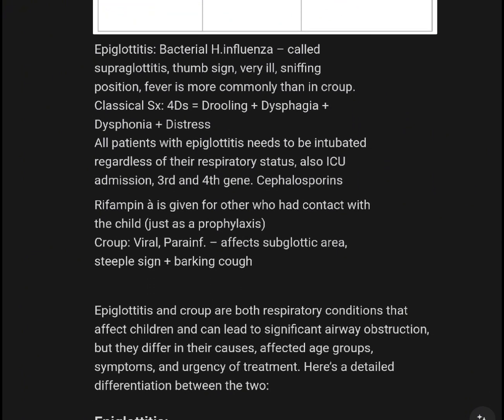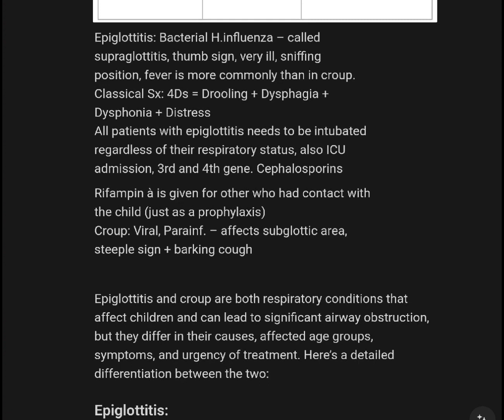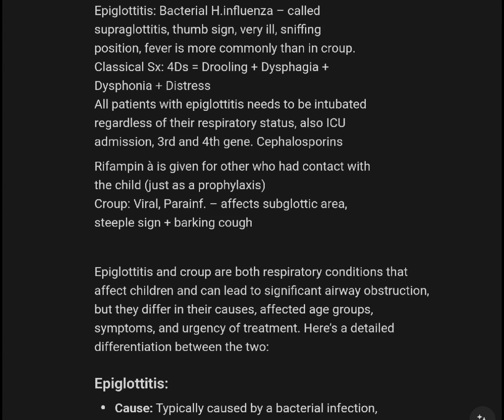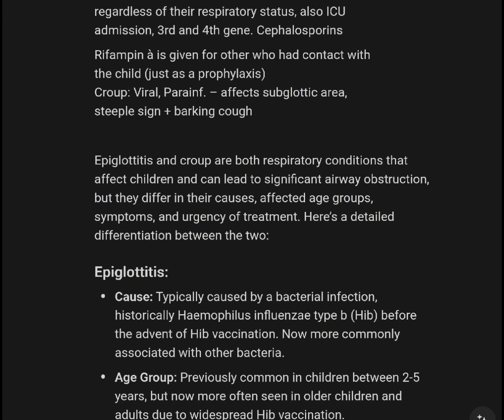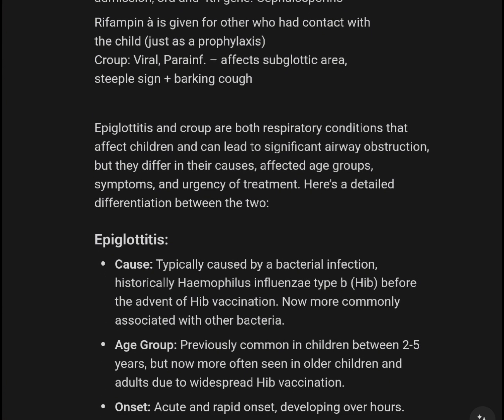Epiglottitis involves supraglottic structures. Signs include the thumbprint sign, very ill appearance, and sniffing position. Fever is more common in epiglottitis than in Croup. Classical symptoms of epiglottitis include drooling, dysphagia, dyspnea, and distress — the 4 Ds. All patients with epiglottitis need to be intubated regardless of their respiratory status. ICU admission is required. Third and fourth generation antibiotics are used. Rifampin prophylaxis is given to those who had contact with the child.